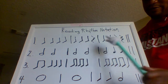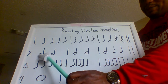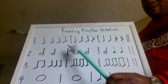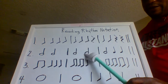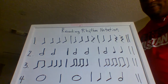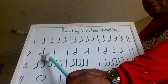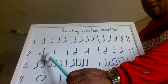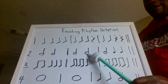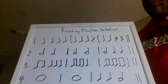Let's count line two. Ready — clap and count: one, three, one, three, one, three, four. Let's do line two again: one, two, ready, and count: one, three, one, three, four.